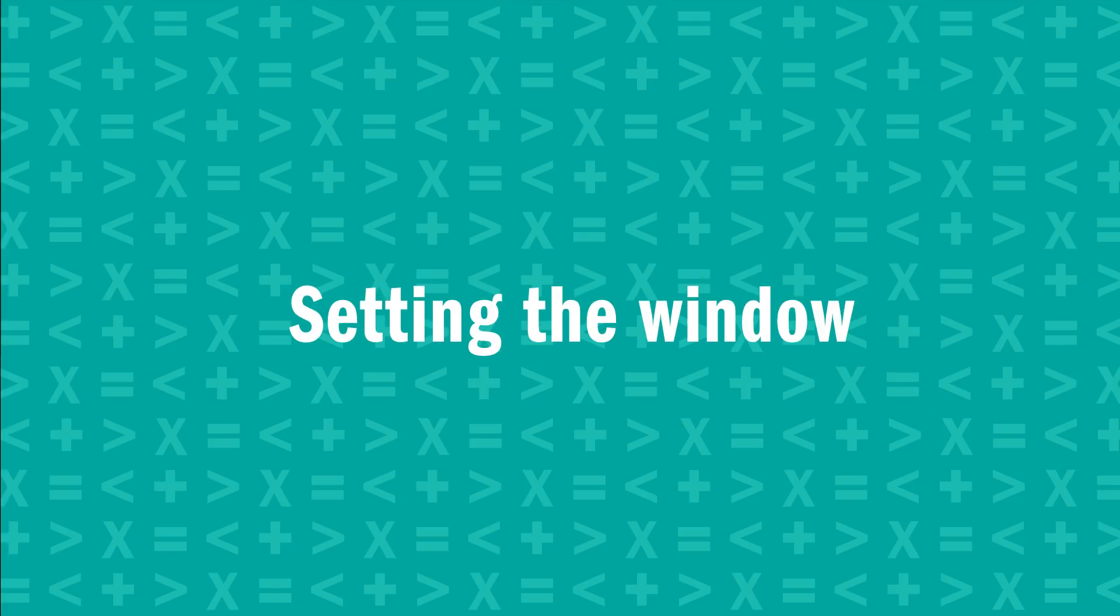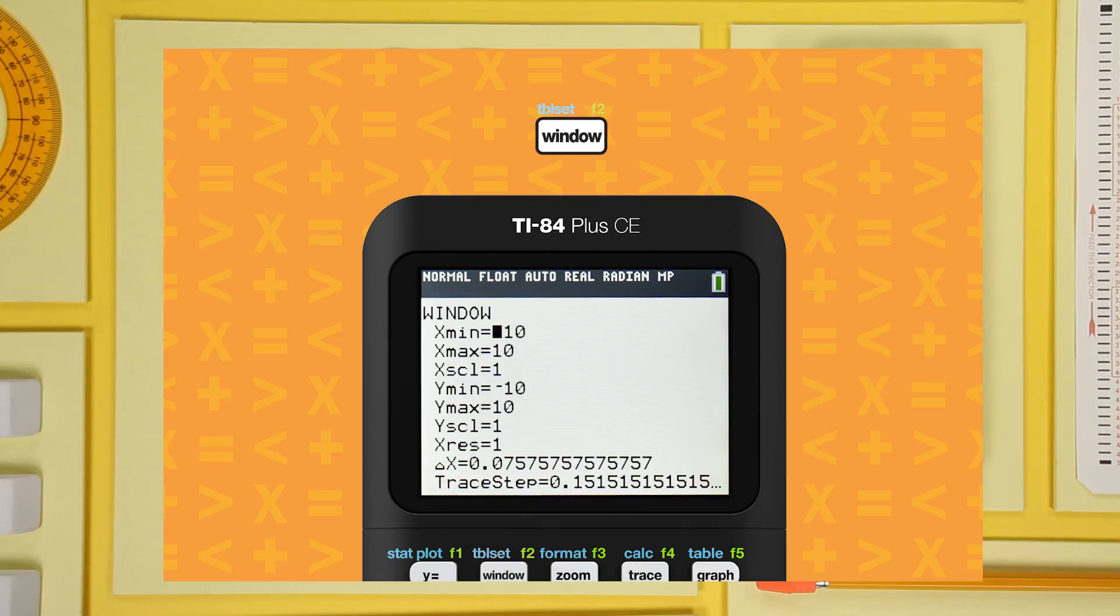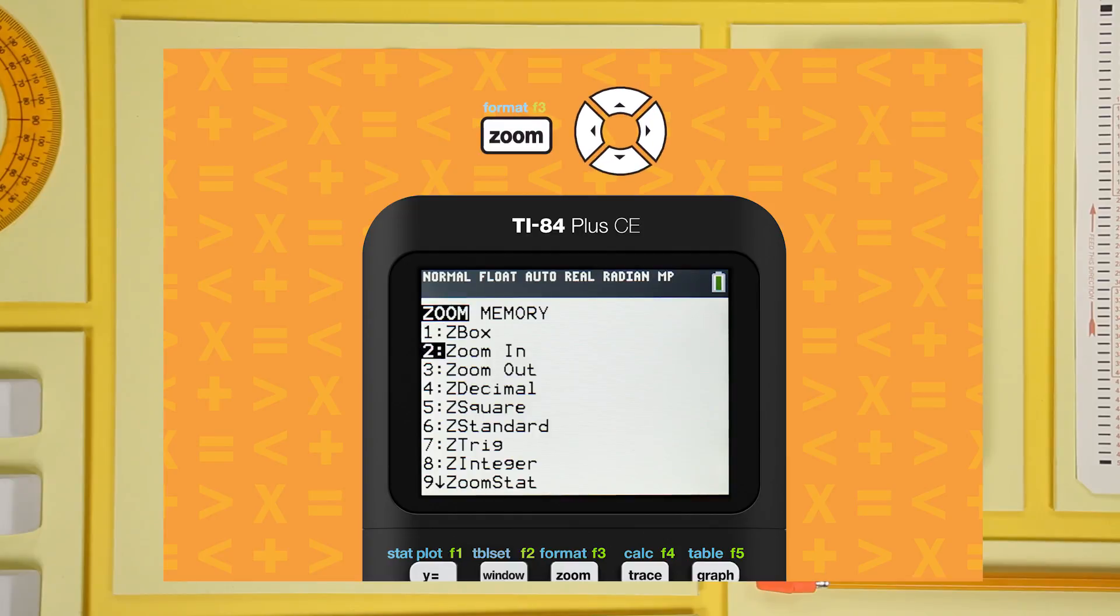Now, for our next trick, we will set the boundary values for the x and y axes. This is called setting the window. Press the window key. For standardized tests, it's best to start with values of negative 10 to 10 for both axes. If something doesn't look right, you can set the values manually here. Or hit zoom and select Z standard to restore the standard window settings.